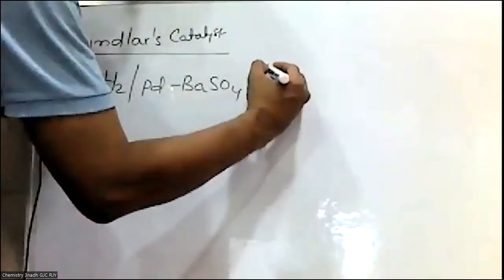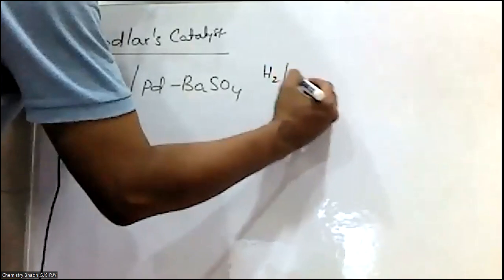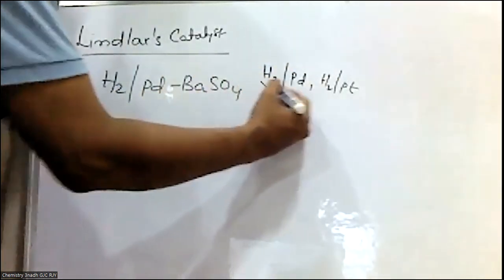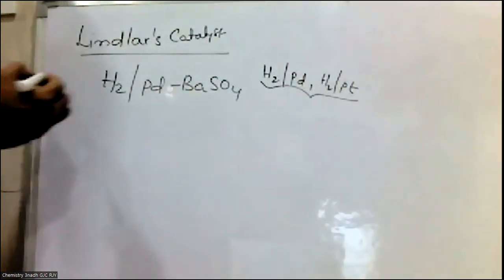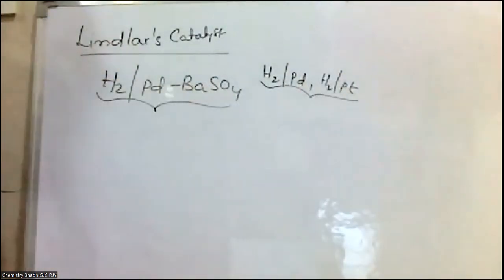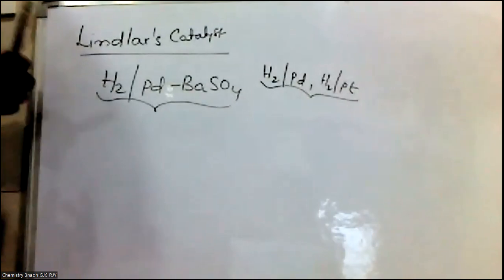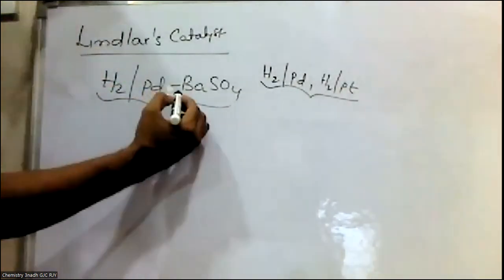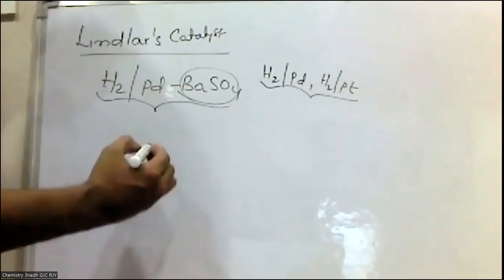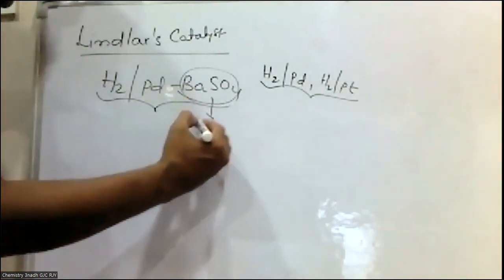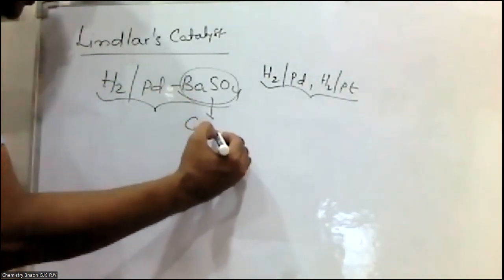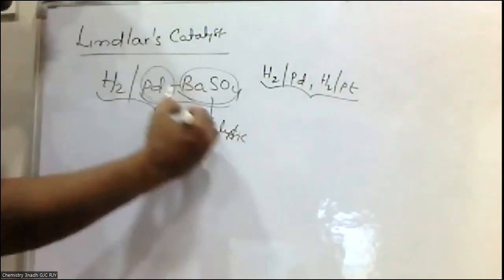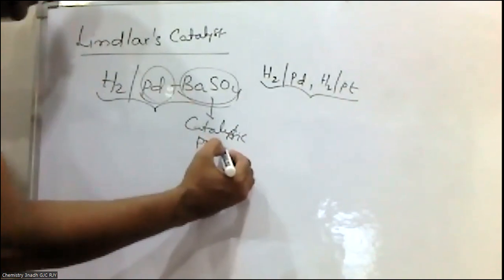Generally, hydrogenation can be carried out using H2 by palladium or H2 by platinum. But H2 by palladium by barium sulfate is what we call Lindlar's Catalyst. Here, barium sulfate is used as a catalytic poison, and it reduces the activity of the palladium catalyst.